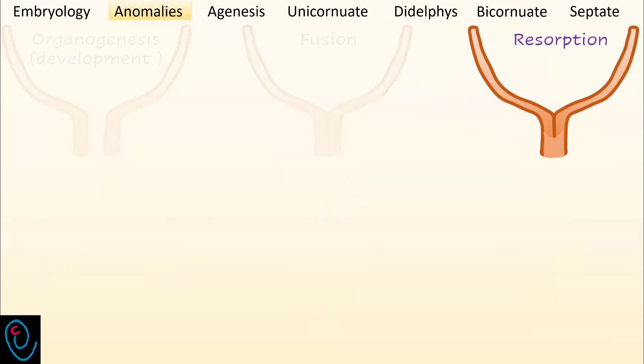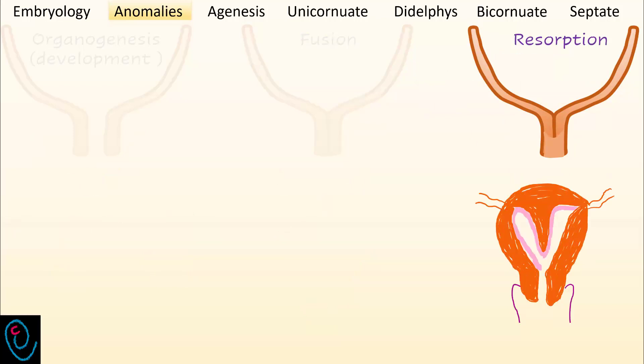Failure of resorption results in a septate uterus. Now let's describe a few details about every abnormality.